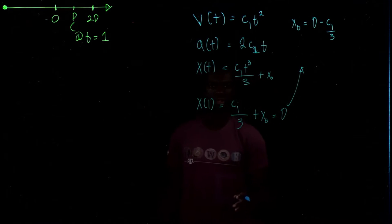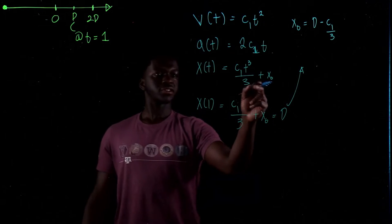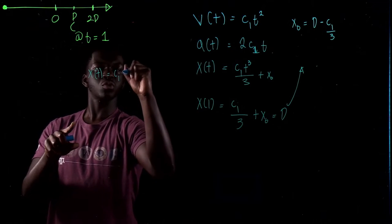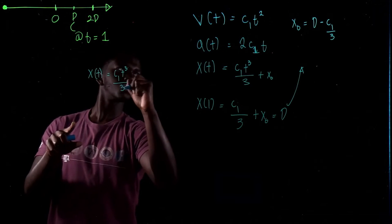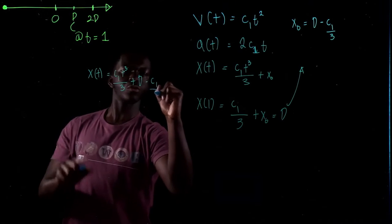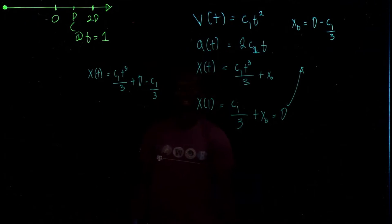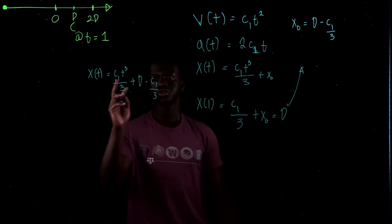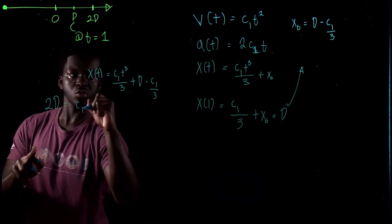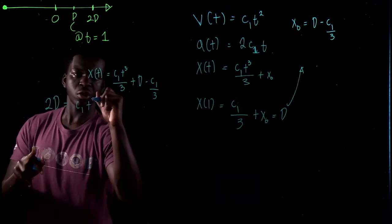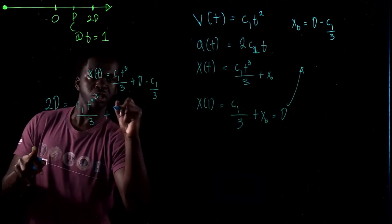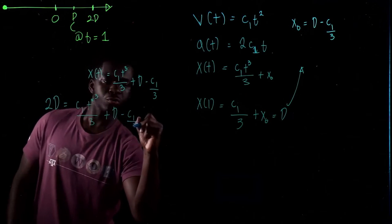So now we know x0 is equal to d minus c1 over 3. Now we can put that into the x of t formula. So x of t is equal to c1t cubed over 3 plus d minus c1 over 3. That is the equation we have for x of t, and we're trying to find when it reaches 2d. So we set all this equal to 2d: 2d is equal to c1 times t-star cubed over 3 plus d minus c1 over 3.